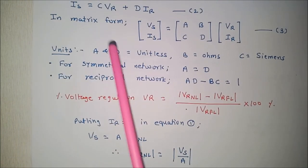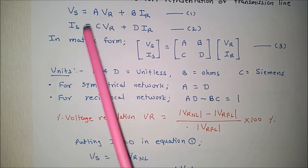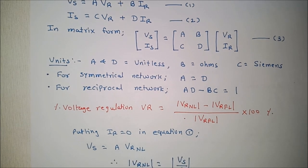Transmission efficiency already you know how to determine. Transmission efficiency it is ratio of receiving end power by sending end power and already we have determined Vs. From that we can determine Ps sending end power and receiving end power is usually specified in the problem.